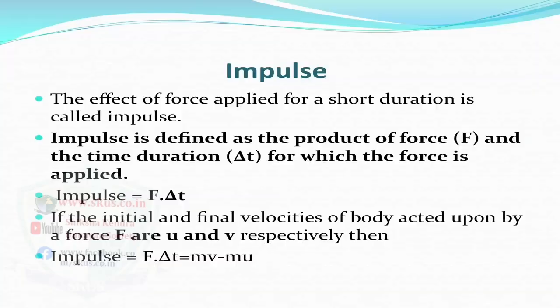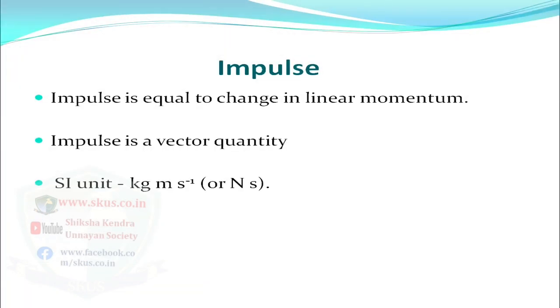Now, what is impulse? The effect of a force applied for a short duration is called impulse. Impulse is defined as the product of force F and the time duration ΔT for which the force is applied, so impulse = F·ΔT. If the initial and final velocities of a body acted upon by force F are U and V respectively, impulse equals the change in linear momentum. Impulse is a vector quantity and its SI unit is kg·m/s.